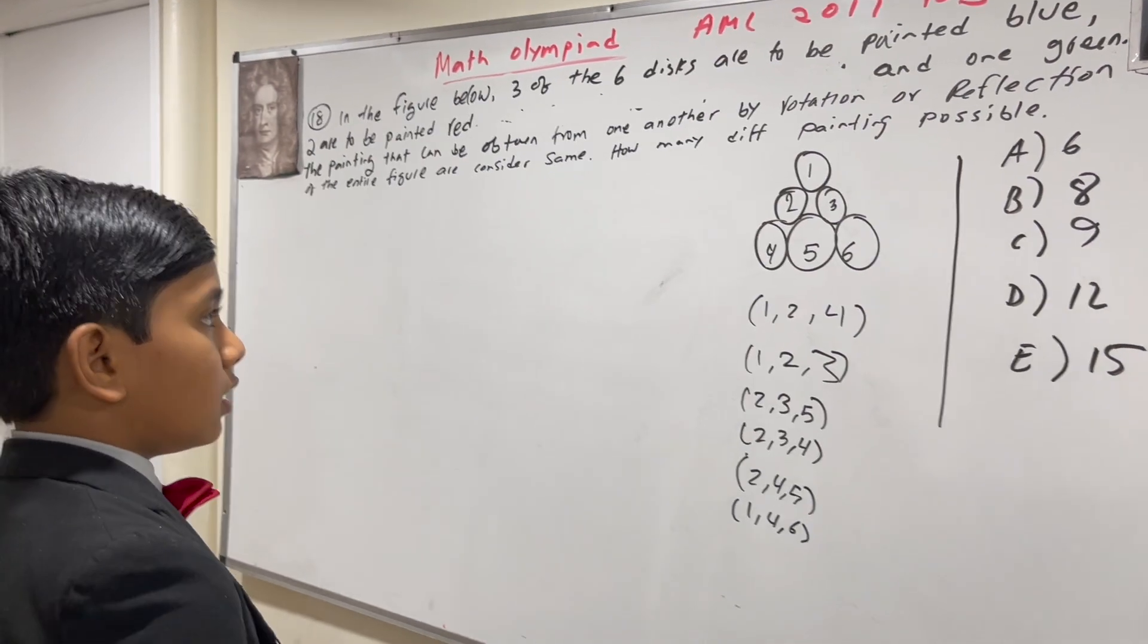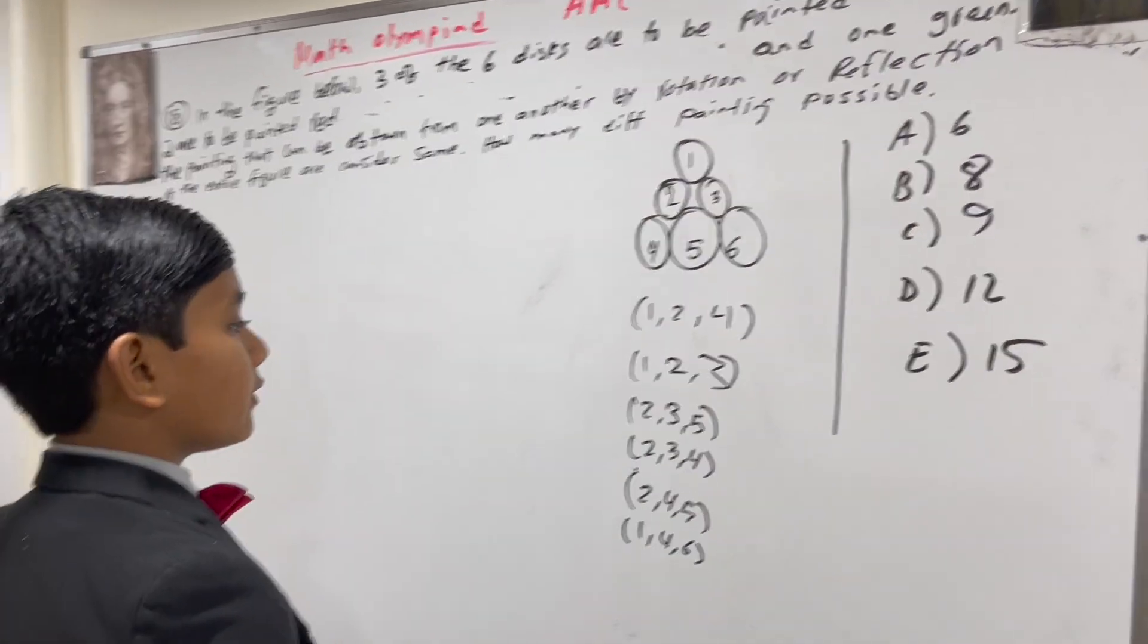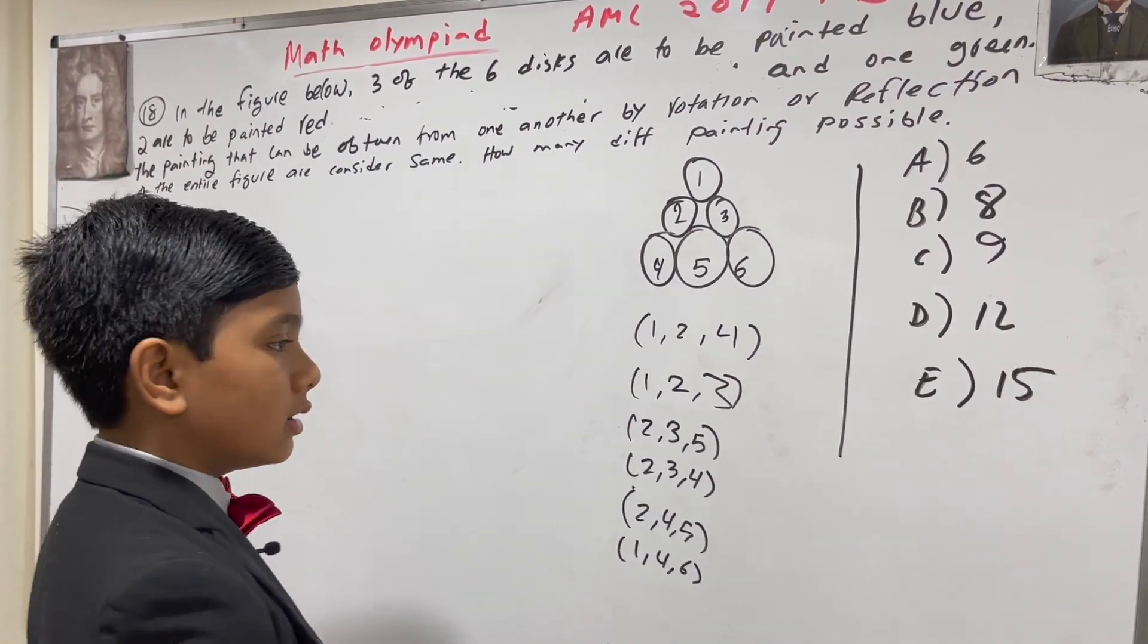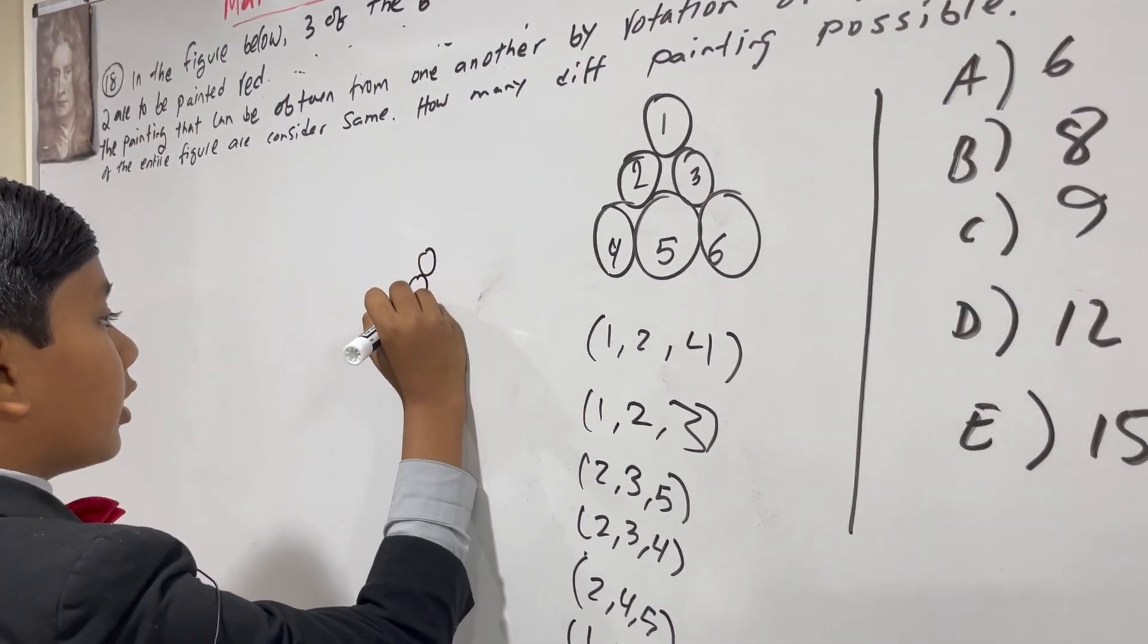So, this makes up 6 possibilities for the green discs. And, for each one, there are 2 possibilities, considering where the green and red ones go.